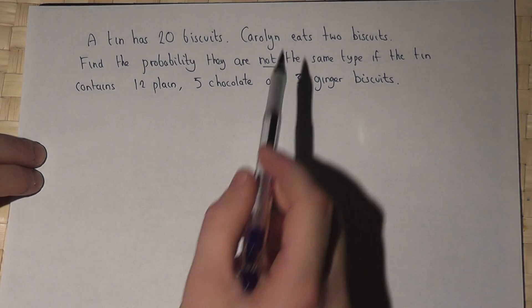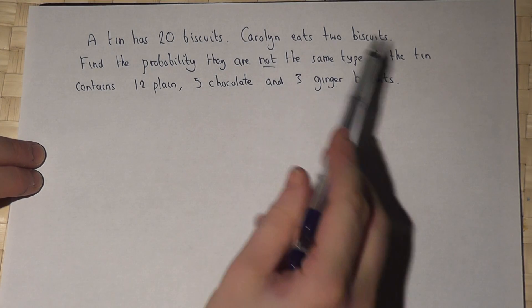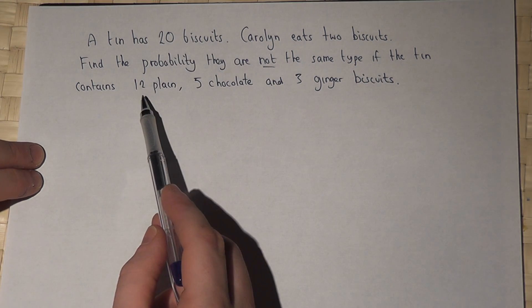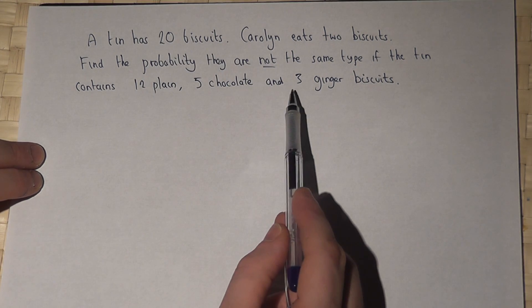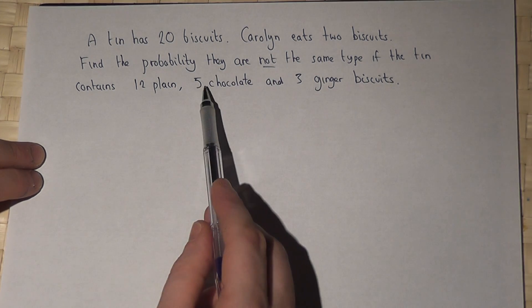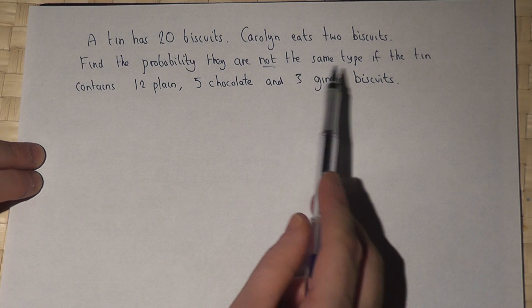In this problem, Carolyn eats two biscuits from a tin. The tin contains 20 biscuits: 12 plain, five chocolate, and three ginger biscuits. The question is, what's the chance that they're both not the same type?